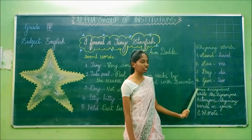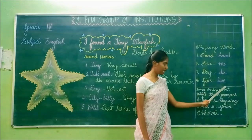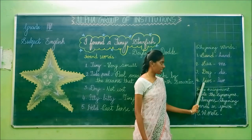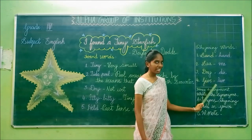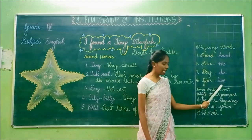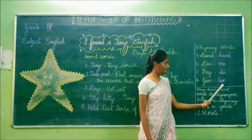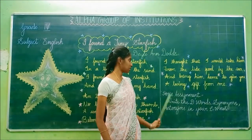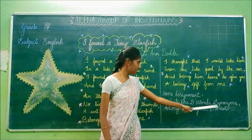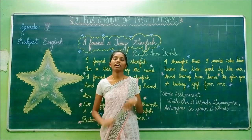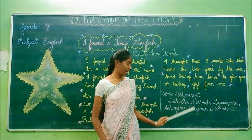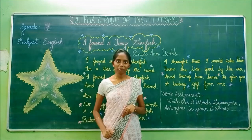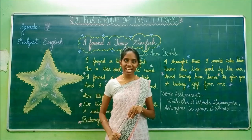Now the fourth rhyming pair: give and live. G-I-V-E, give, and L-I-V-E, live. Okay students, for today's assignment, write the vocabulary words' synonyms and antonyms in your classwork. Take a fresh page and write the words, synonyms, and antonyms. Hope you all understood the poem. See you in the next class. Thank you.